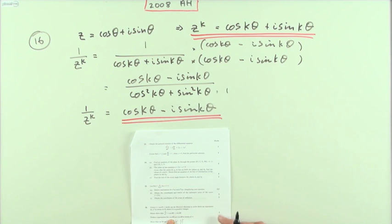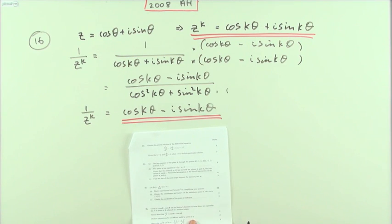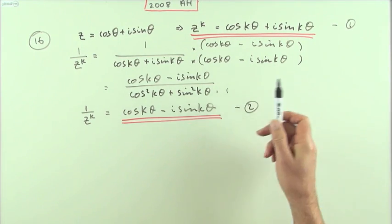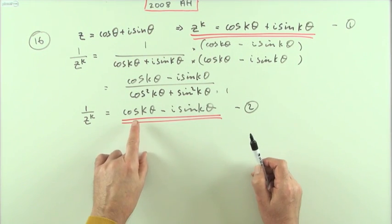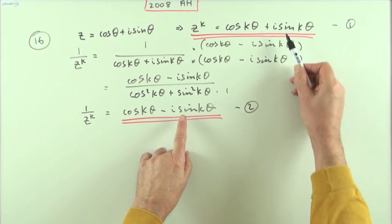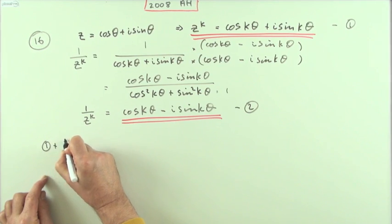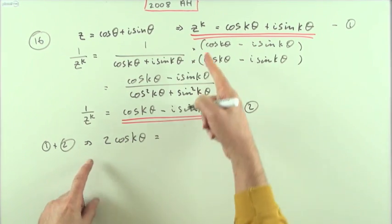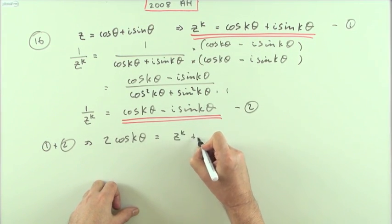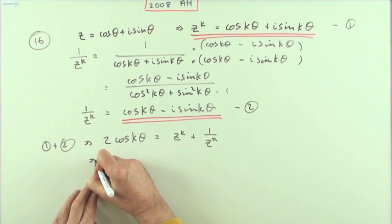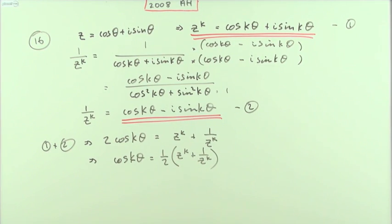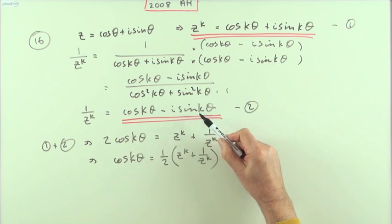Next part: deduce expressions for cos(kθ) and sin(kθ) in terms of z — which can mean z to the k or 1 over z to the k and so on, for two marks. You have two equations involving cosines and z to the k. To isolate cos(kθ), adding the two equations removes the imaginary part: equation one plus equation two gives 2·cos(kθ) = z to the k + 1 over z to the k, so cos(kθ) = one half of (z^k + 1/z^k).